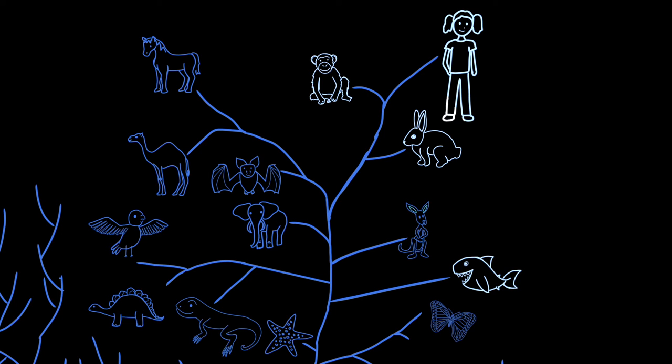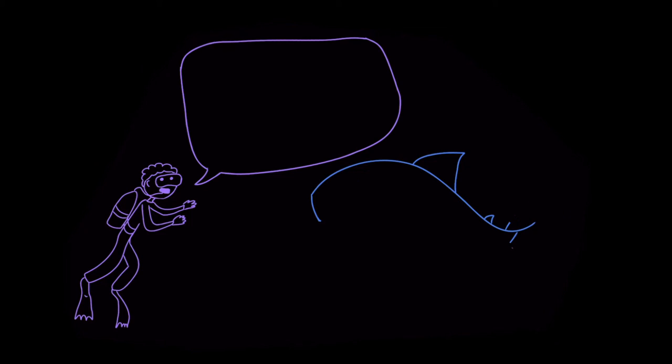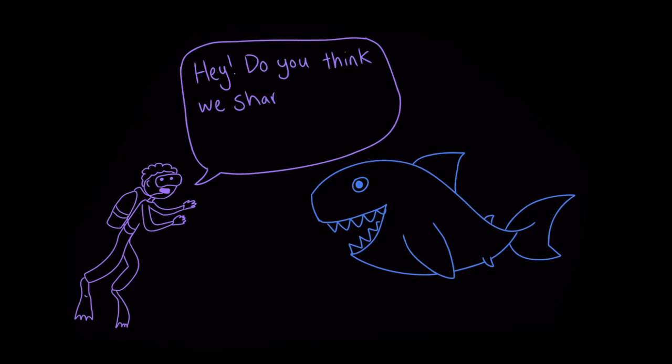And you might be wondering, how can scientists determine how closely two species are related to each other? Asking a shark, 'hey, do you think we shared a common ancestor 440 million years ago?' doesn't help, because even if they spoke English, they probably wouldn't know the answer either.